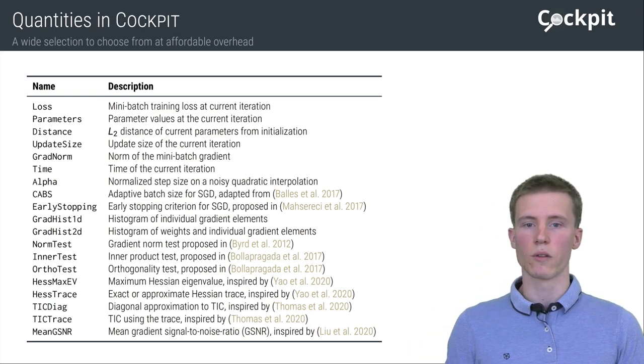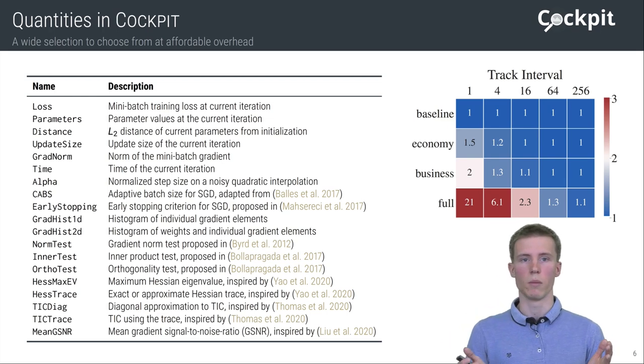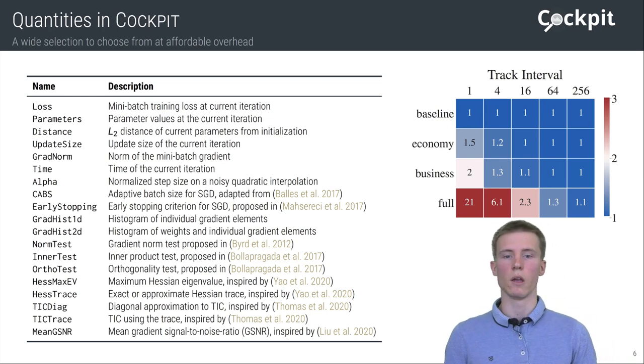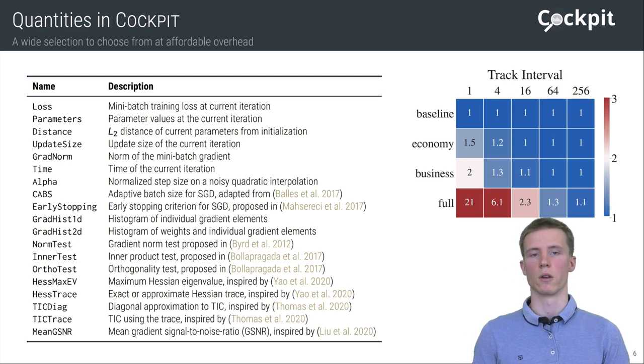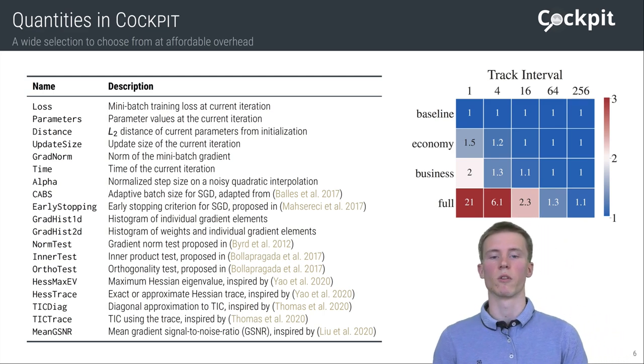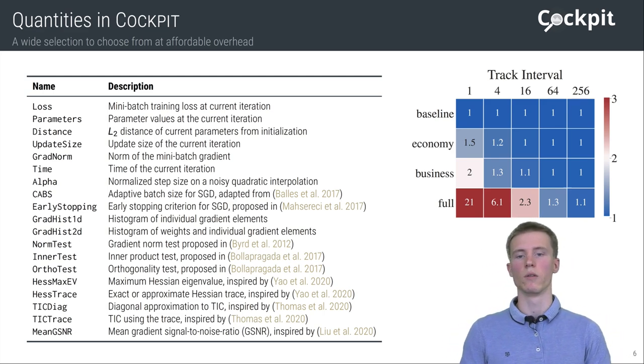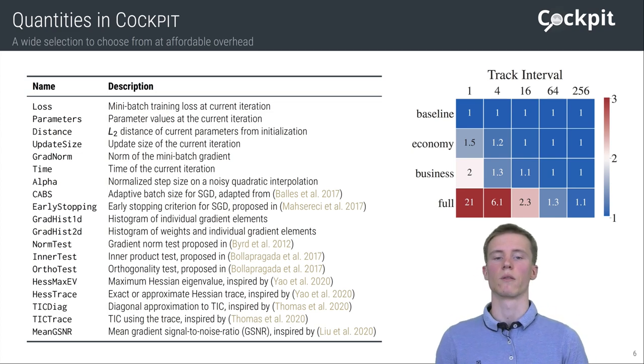Out of the box, we provide three different configurations: economy, business, and full that increase in richness of information. And in our benchmarks, we demonstrate that all of them can be used at practical tracking rates with far less than doubling the training time.